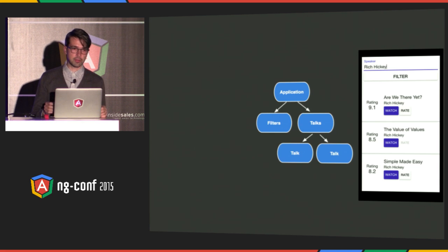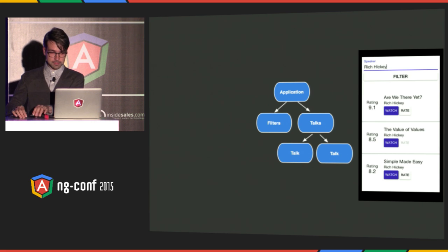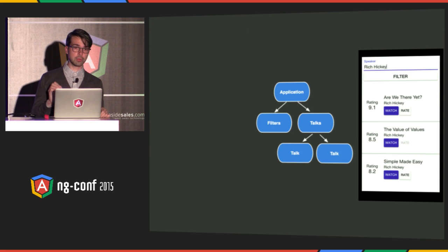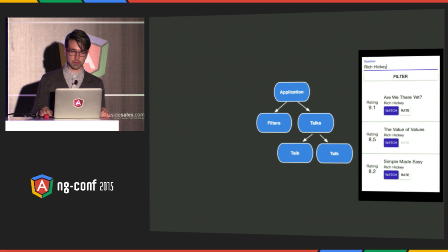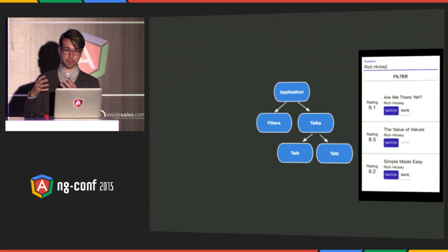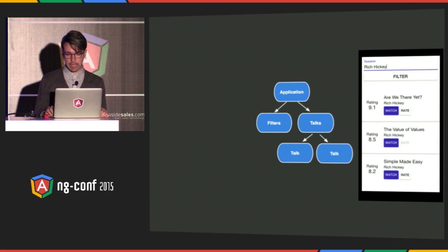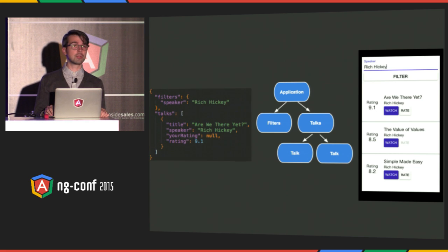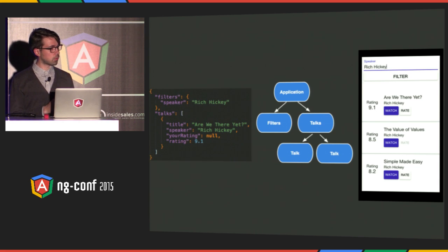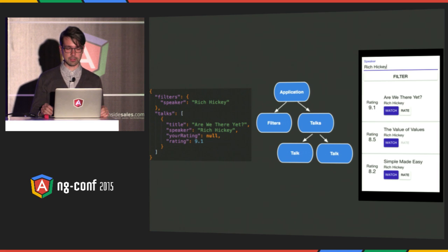Let's look at the components in this tree. We have the filters component — it has the speaker input and the filter button. We have the talks component, plural, which is the list you see at the bottom. And we also have a talk, which is an item in that list. In addition to our component tree, our application will have a model. It's a plain old JavaScript object, nothing fancy.